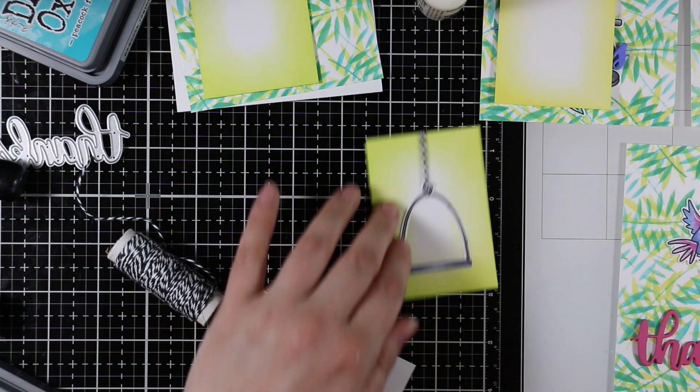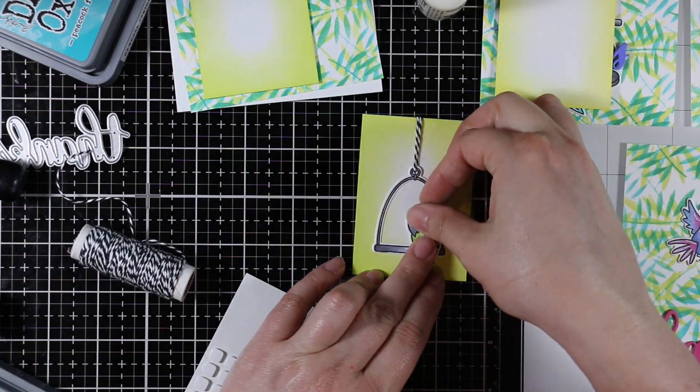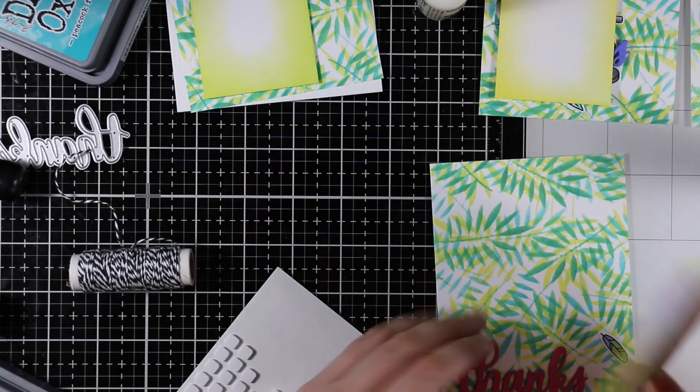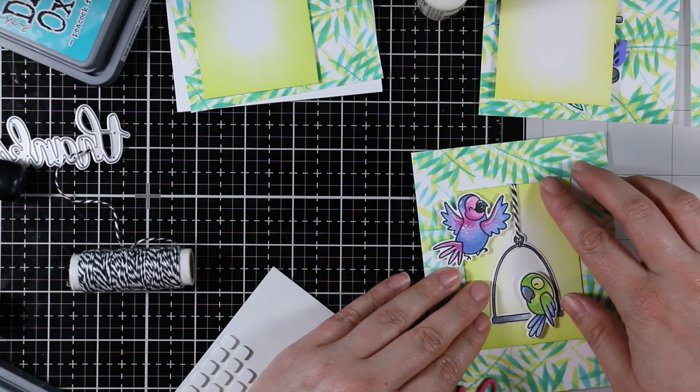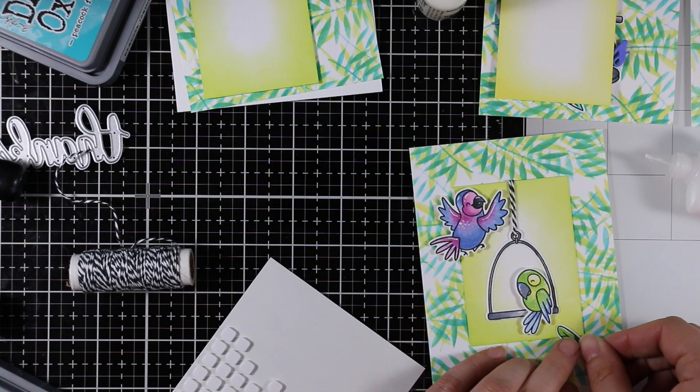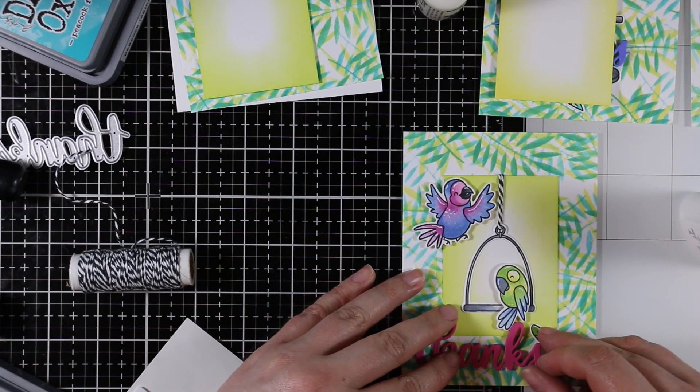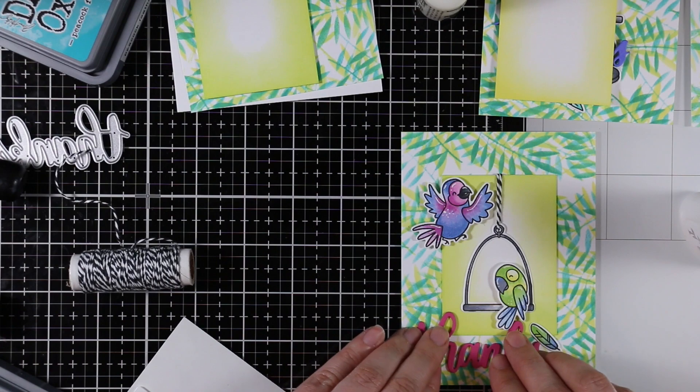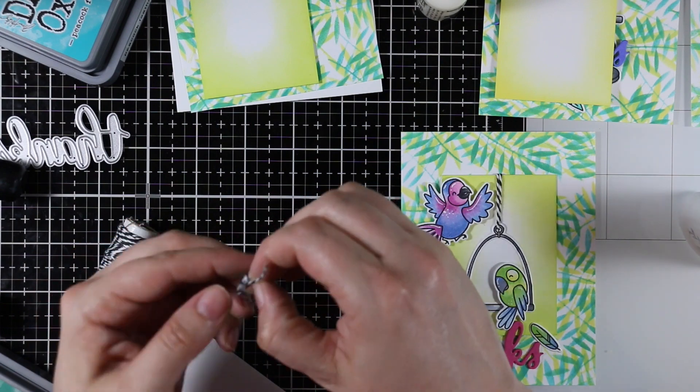Once I glue this down no one's going to see it so it doesn't matter. I've got all of that adhered and then for my little birds I'm going to use just little 3D foam squares to adhere those to these rectangles. Once I have those adhered I decided to adhere these to my backgrounds just using some Nouveau glue. I put a thin amount of that on and then kind of center those onto my backgrounds. Once I've got those in place I can adhere my die-cut sentiments.